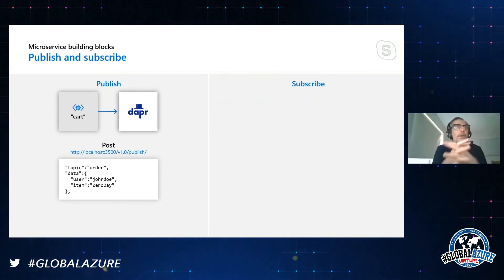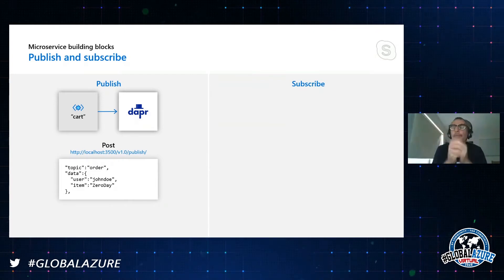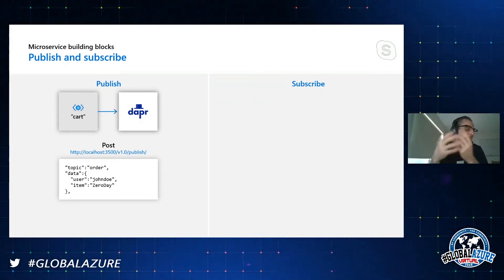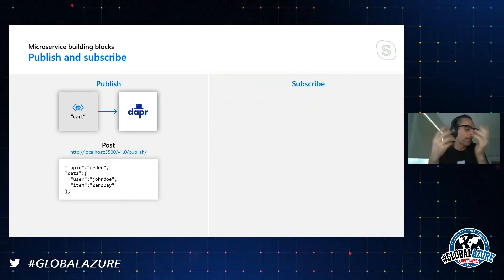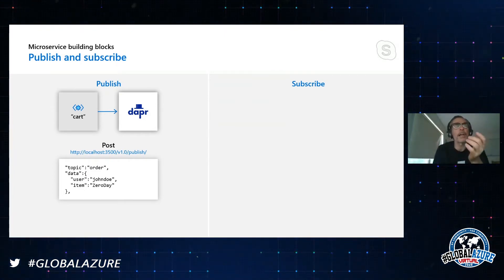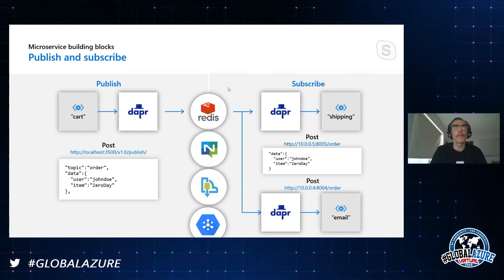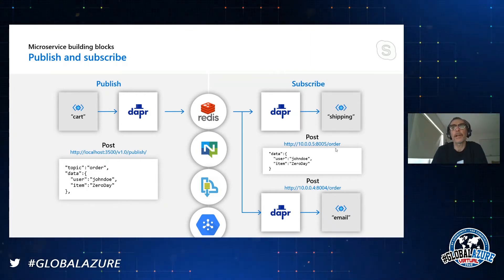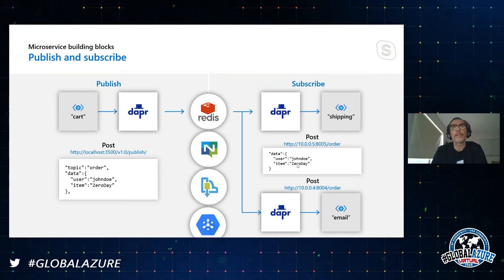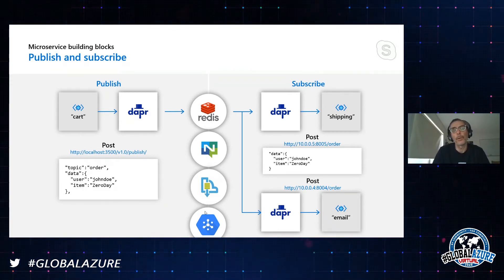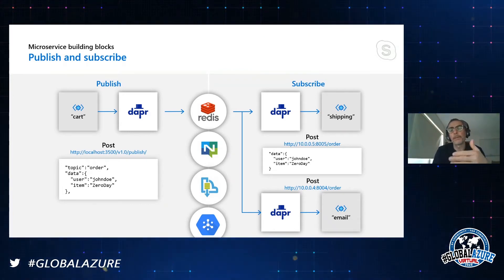Publish and subscribe is a very common pattern — you want to build an event-driven system where you publish messages that other services subscribe to, such as a price change event or a workflow event triggering some processing. DAPR has a built-in PubSub mechanism supporting Redis, NATS, Service Bus, and GCP PubSub. An email service and shipping service can both subscribe to an 'order' topic and receive the data packet broadcast to all subscribers. This allows you to build event-driven applications across different PubSub server types.